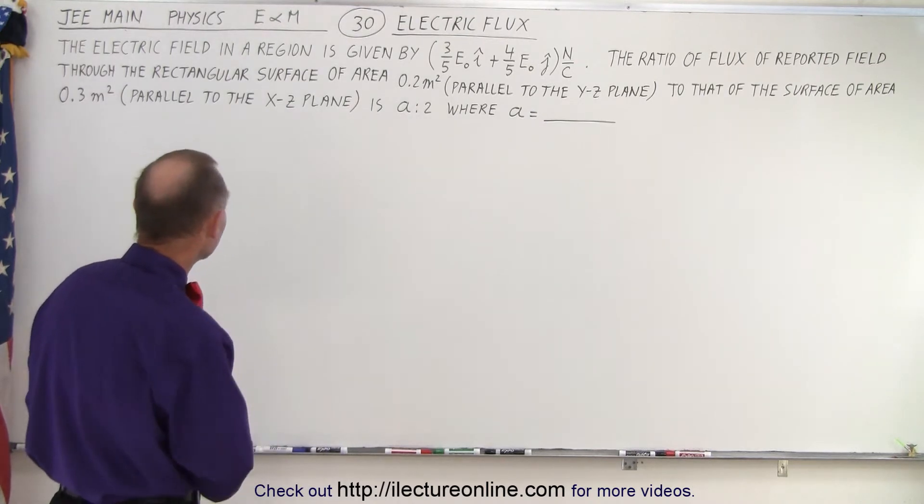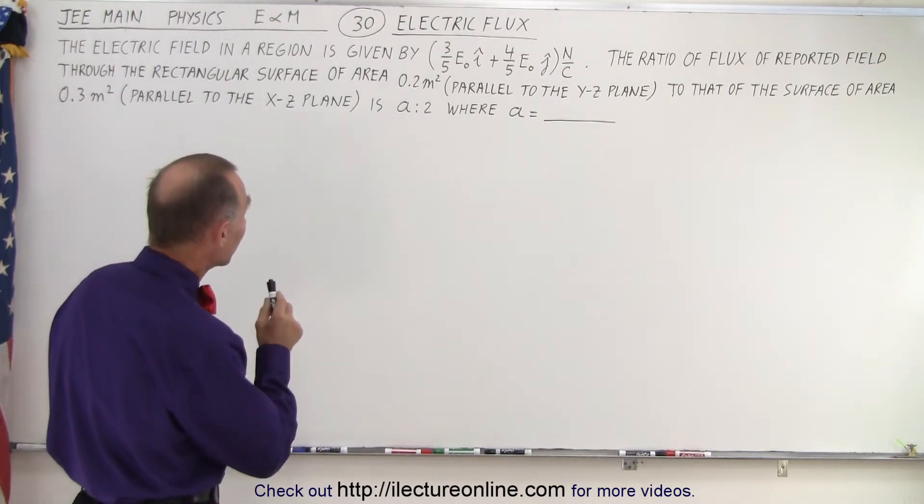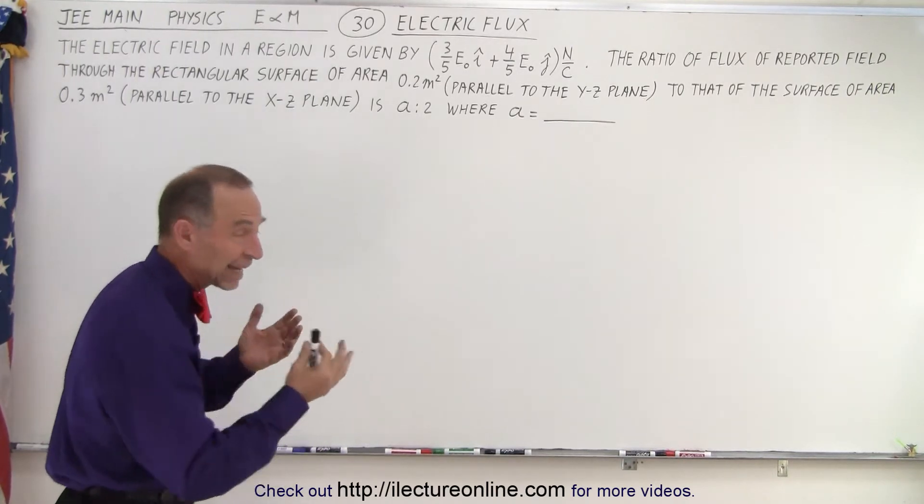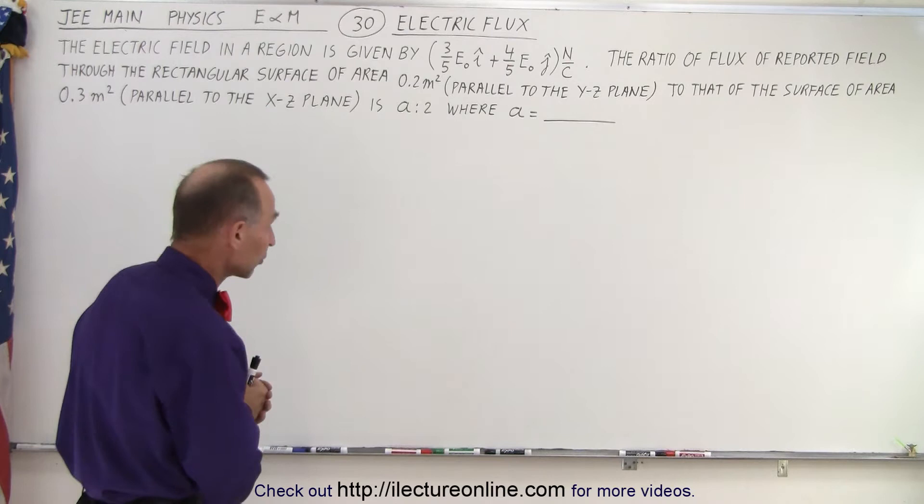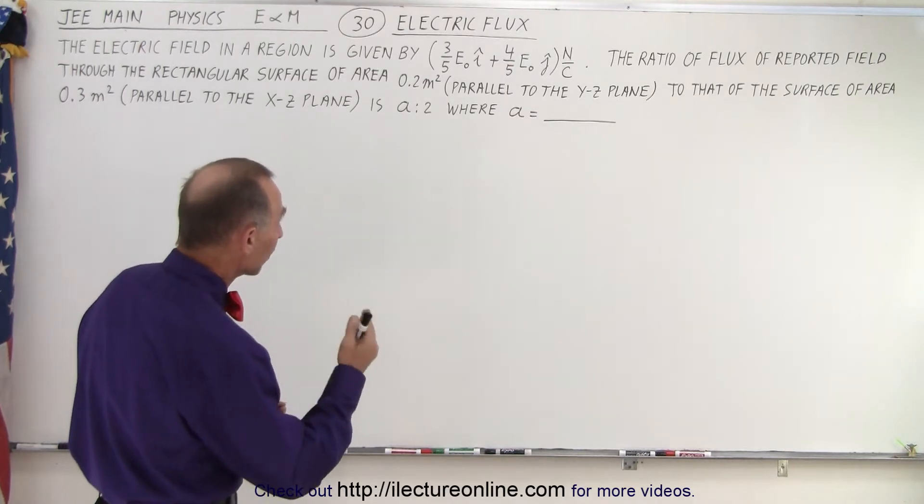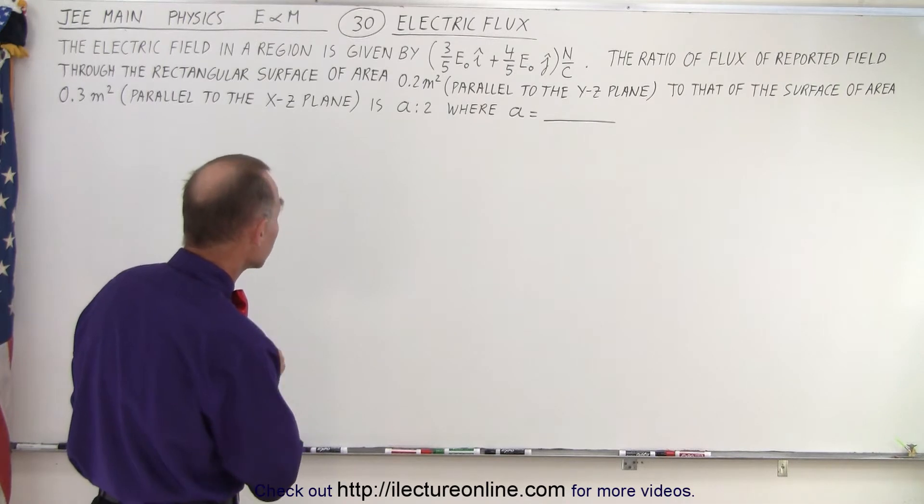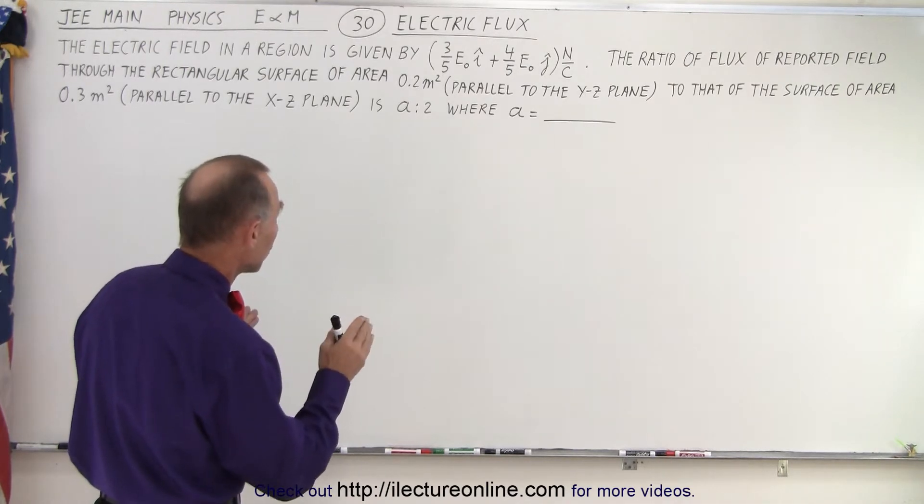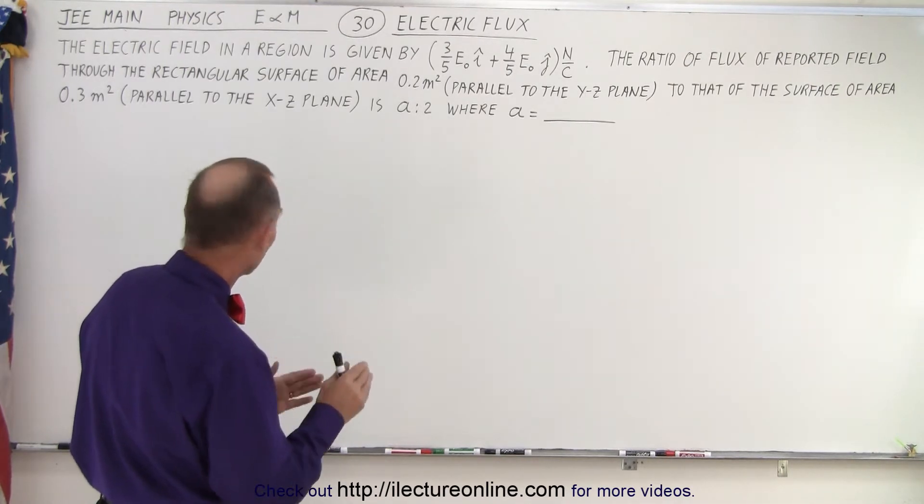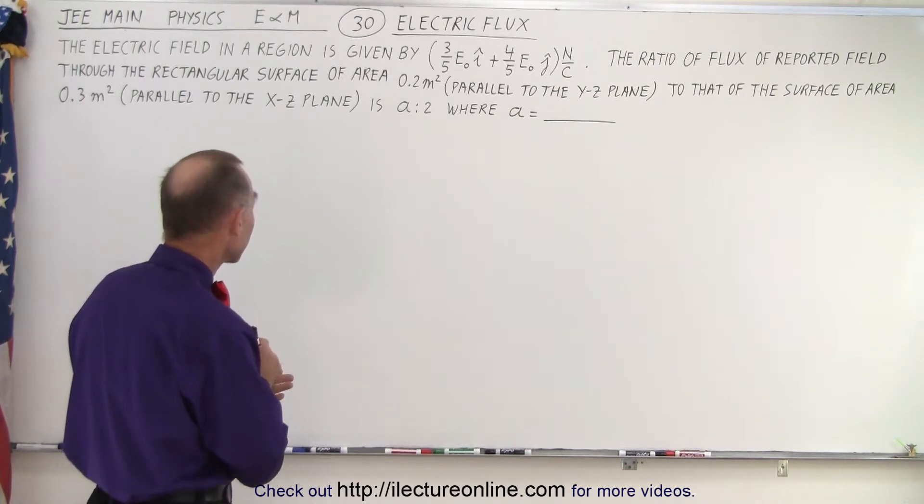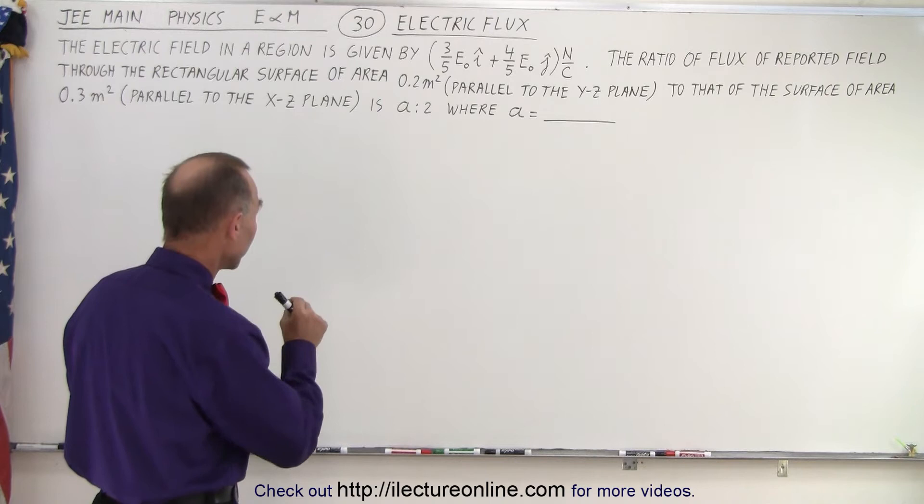It says that we have an electric field in the region given by 3/5 E in the I direction and 4/5 E in the J direction. Of course, I and J are the X and Y unit vectors. The ratio of flux of reported field through the rectangular surface of area 0.2 meters squared parallel to the YZ plane to that of the surface of area 0.3 meters squared parallel to the XZ plane is A to 2 where A is.